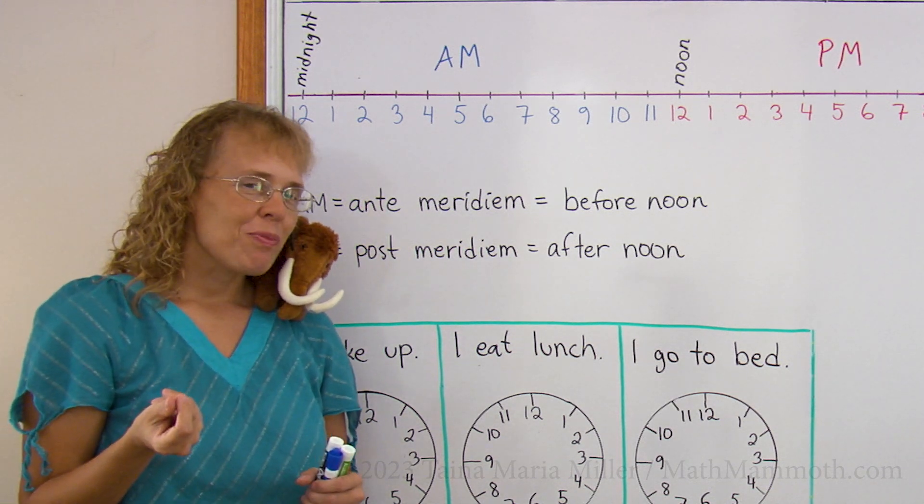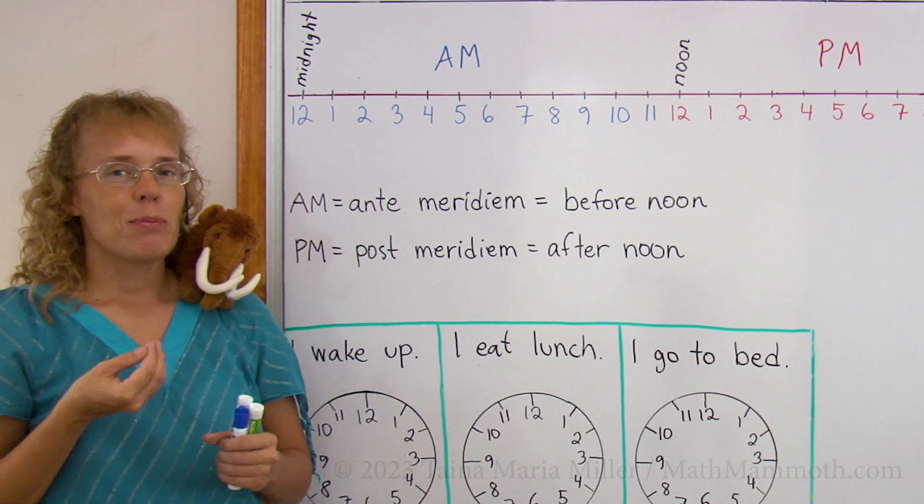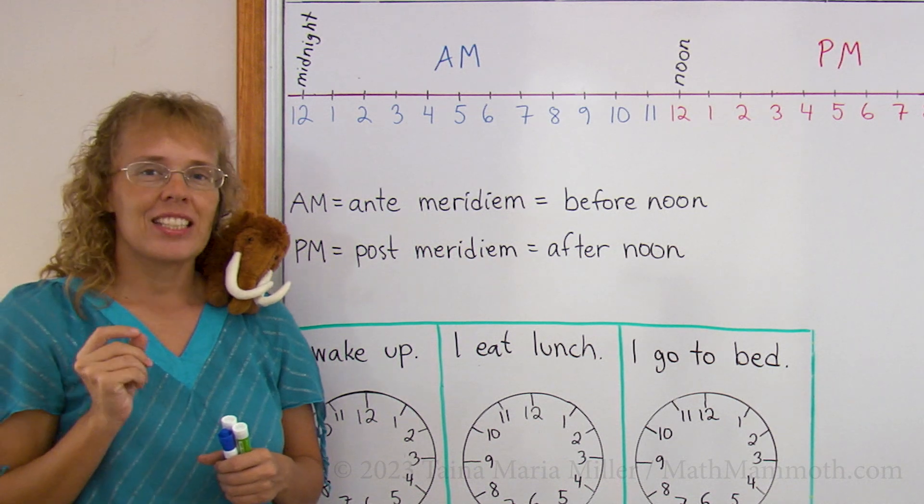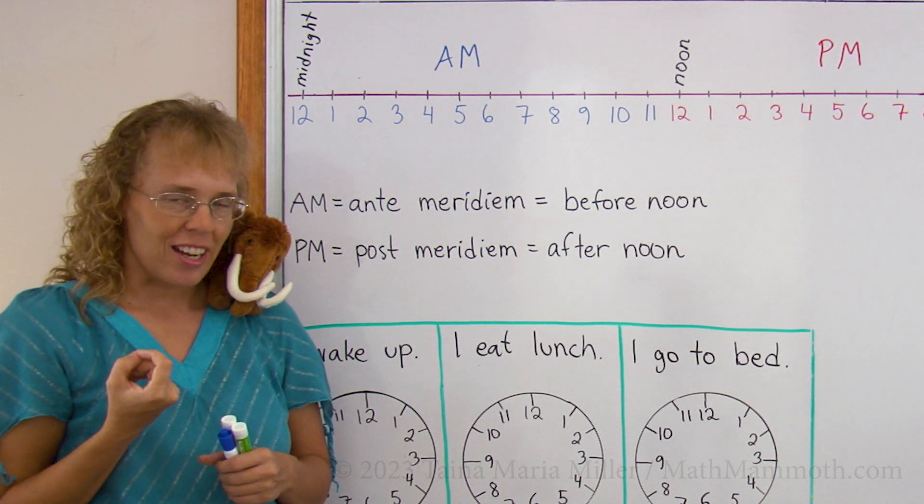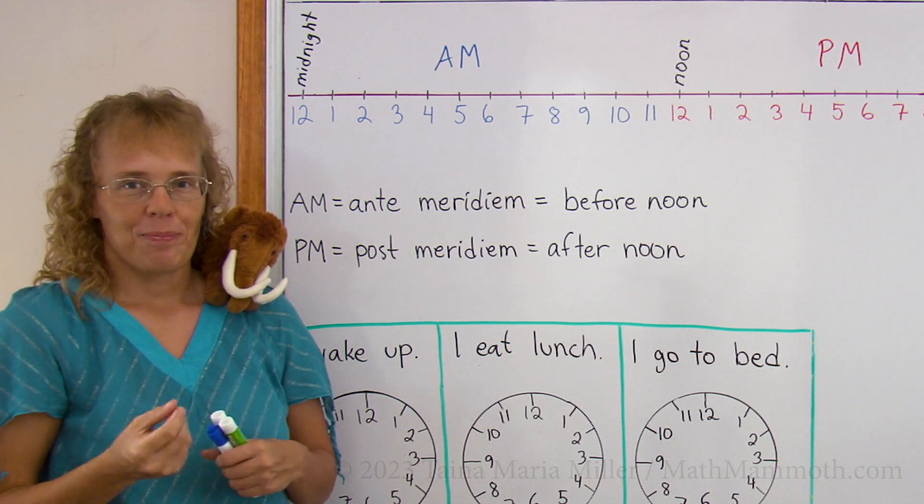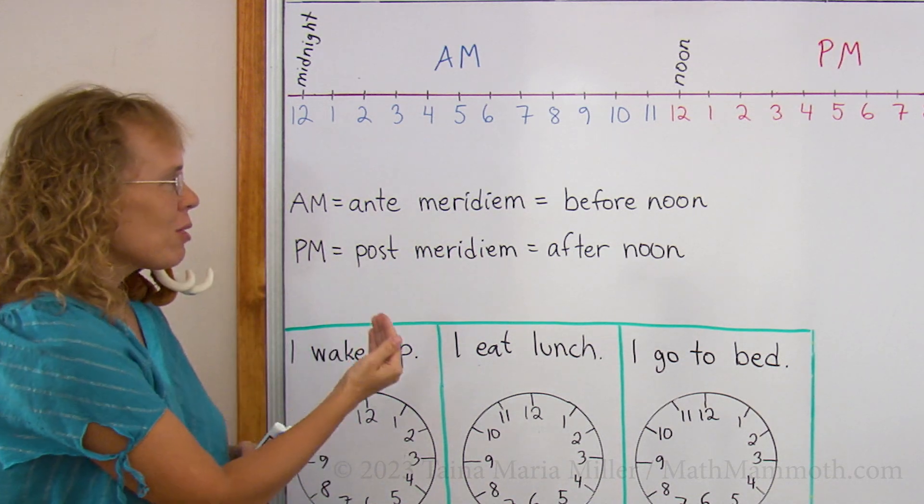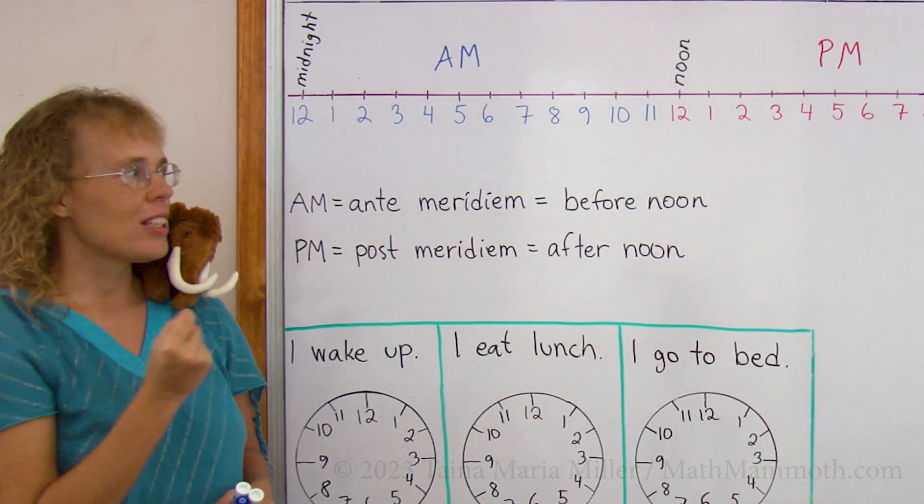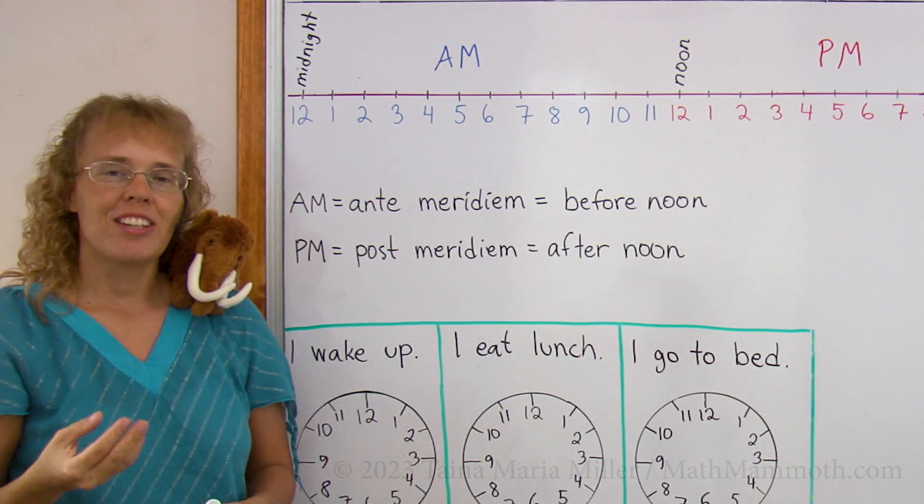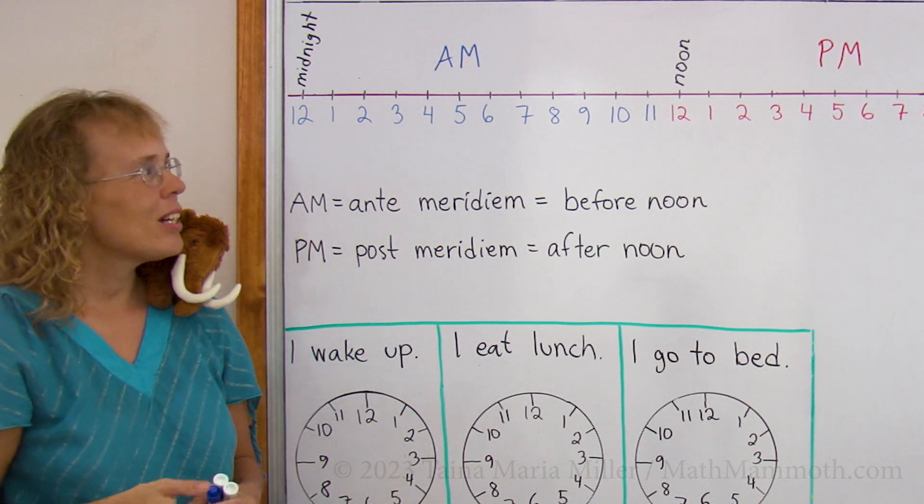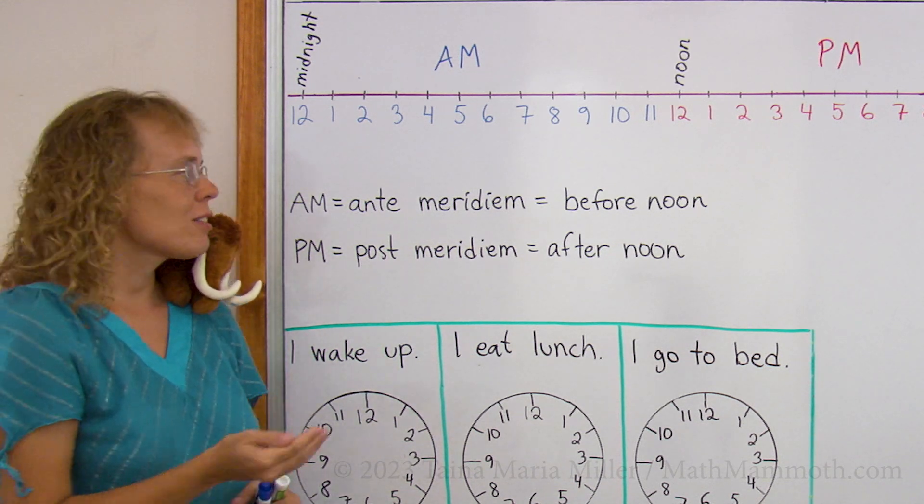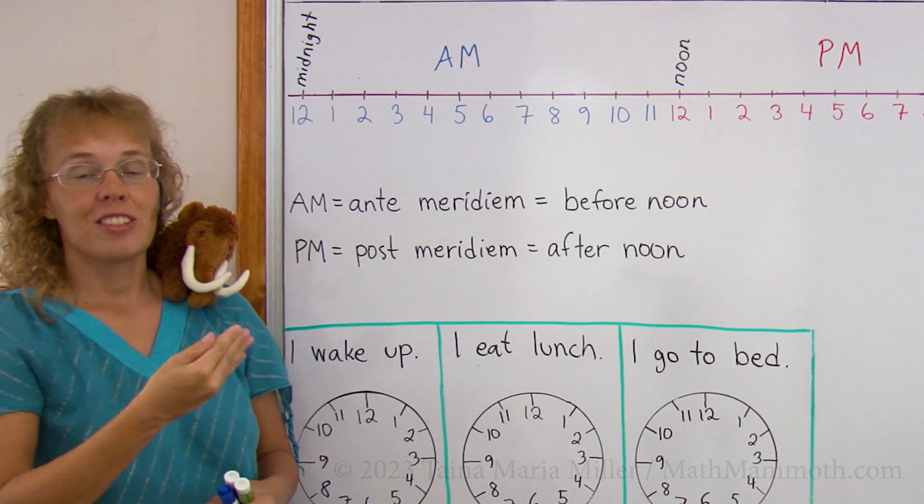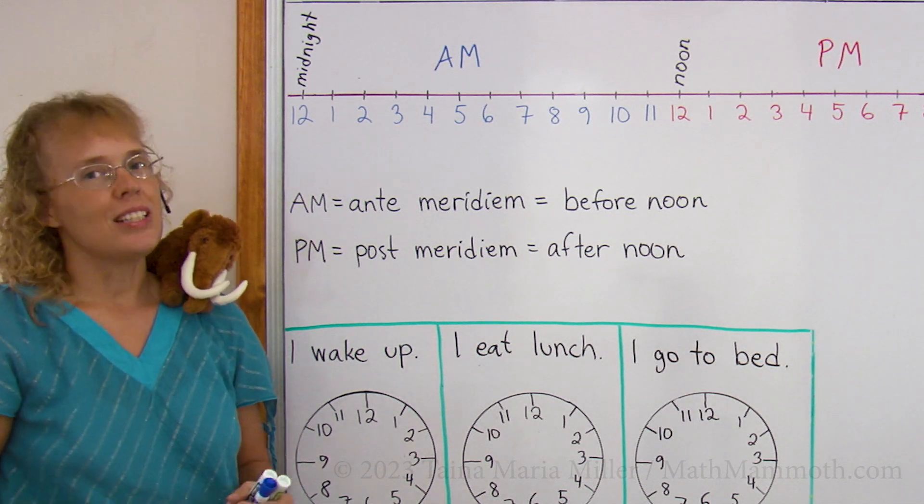So what is noon? Noon is the time of day when the sun is at its highest point on the sky, the middle of the day. And so the hours before middle of the day are before noon, and they are marked with this AM, such as 7 AM or 10 AM. And the hours after that are marked with this PM, after noon, such as 3 PM, 10 PM.